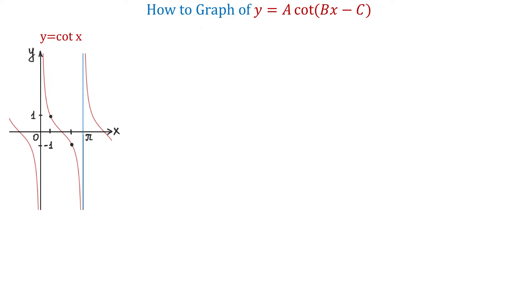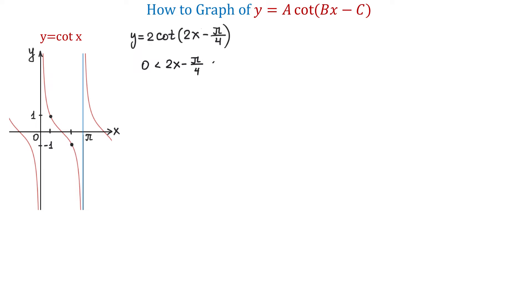Now let's see a complete example on how to graph a function of the form y equals a cotangent of bx minus c. The function that we will graph is y equals 2 cotangent of 2x minus pi over 4. In the first step, we will find the new vertical asymptotes. For this, we will write the expression 2x minus pi over 4 between 0 and pi, and then add pi over 4 to all three parts.